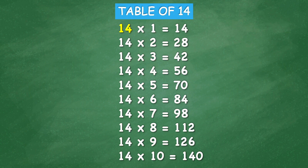Table of 14: 14 times 1 equals 14, 14 times 2 equals 28, 14 times 3 equals 42, 14 times 4 equals 56, 14 times 5 equals 70, 14 times 6 equals 84, 14 times 7 equals 98, 14 times 8 equals 112, 14 times 9 equals 126, 14 times 10 equals 140.